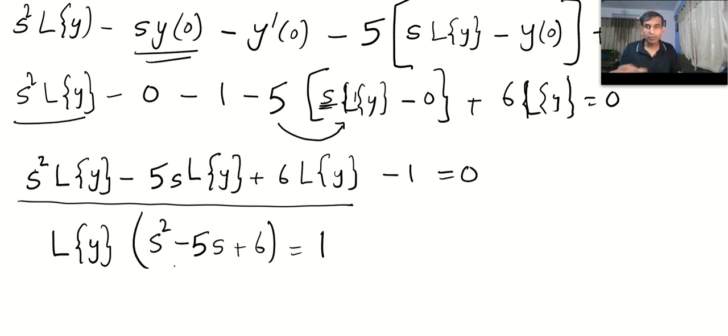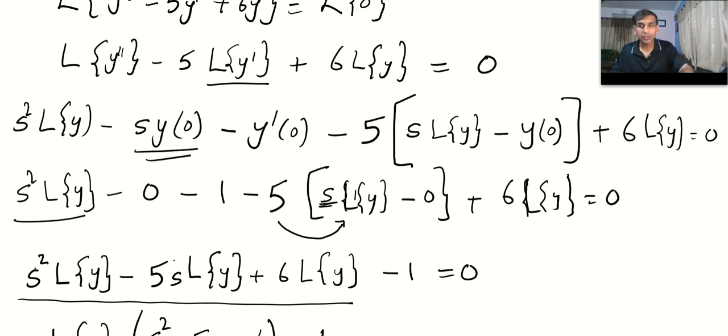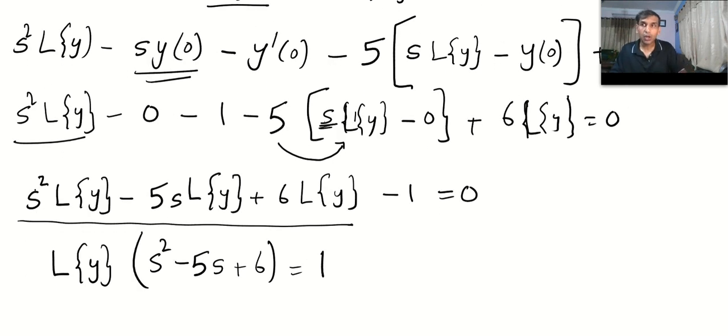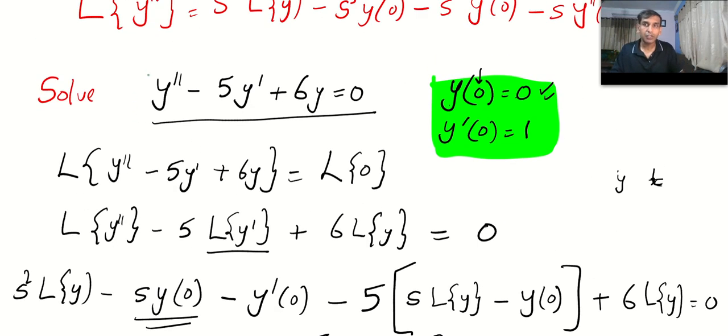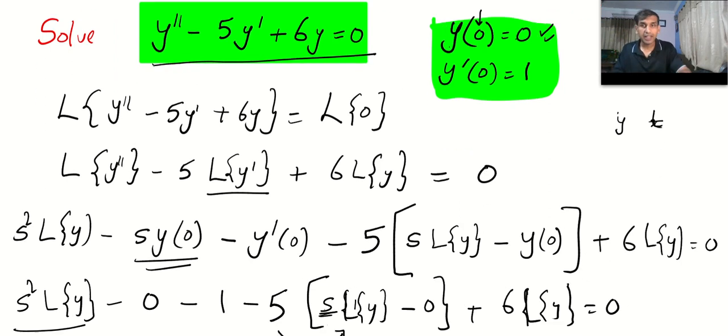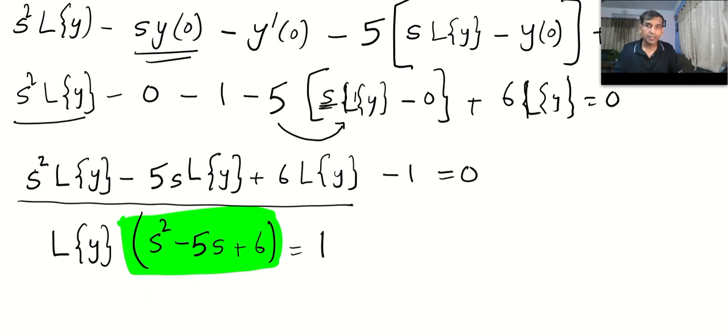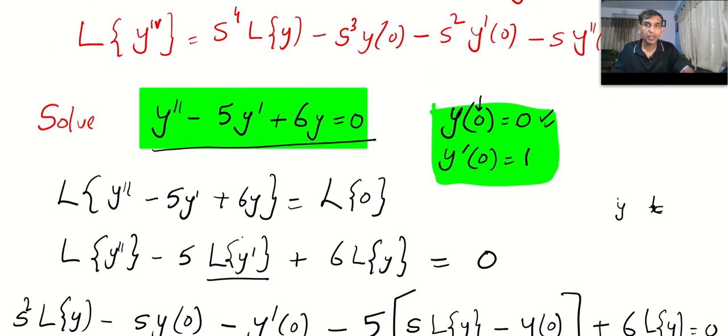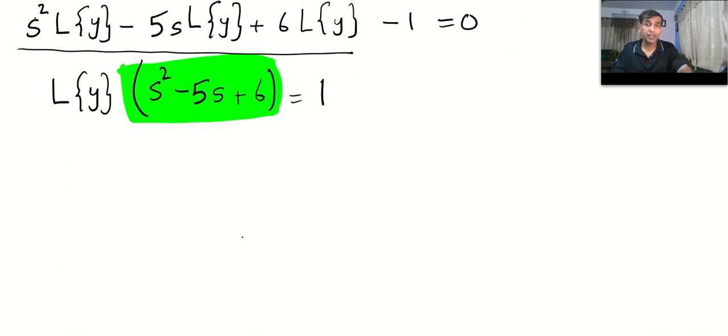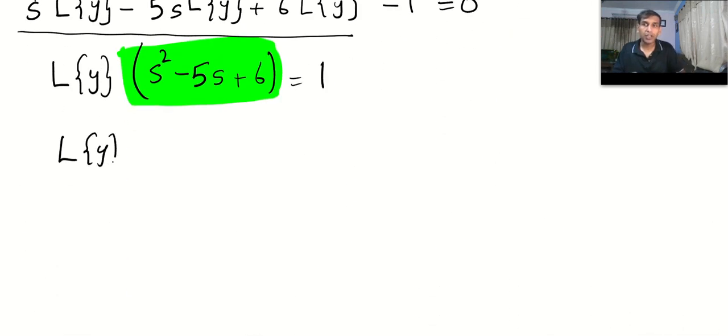You can confirm whether what you did is correct by looking at the question. The quantity along with Laplace of y will be the coefficients. If you made any mistake at this point you can correct. So L{y} = 1/(s² - 5s + 6).